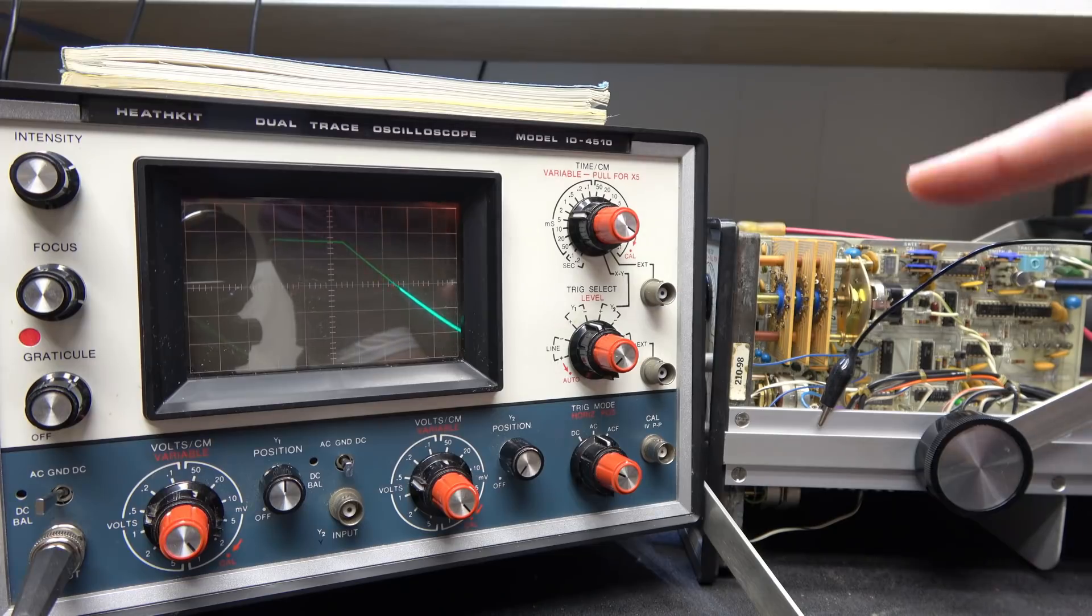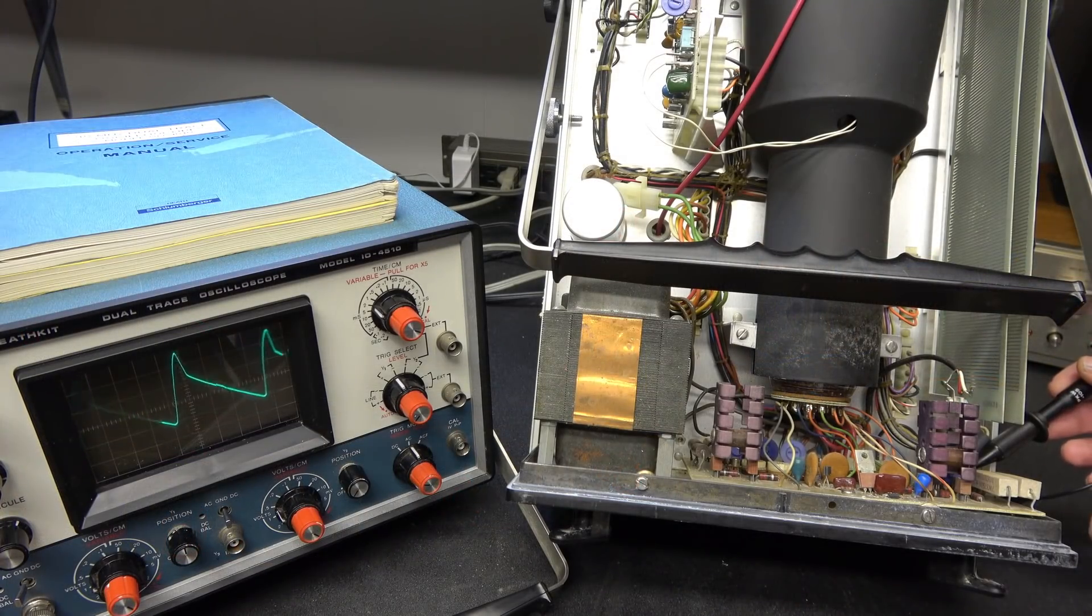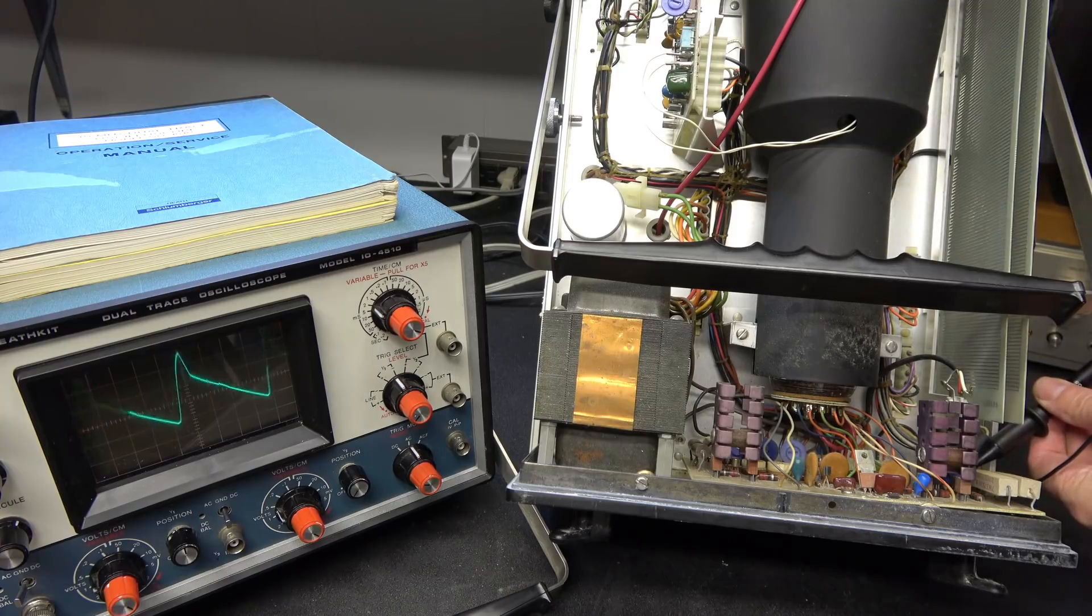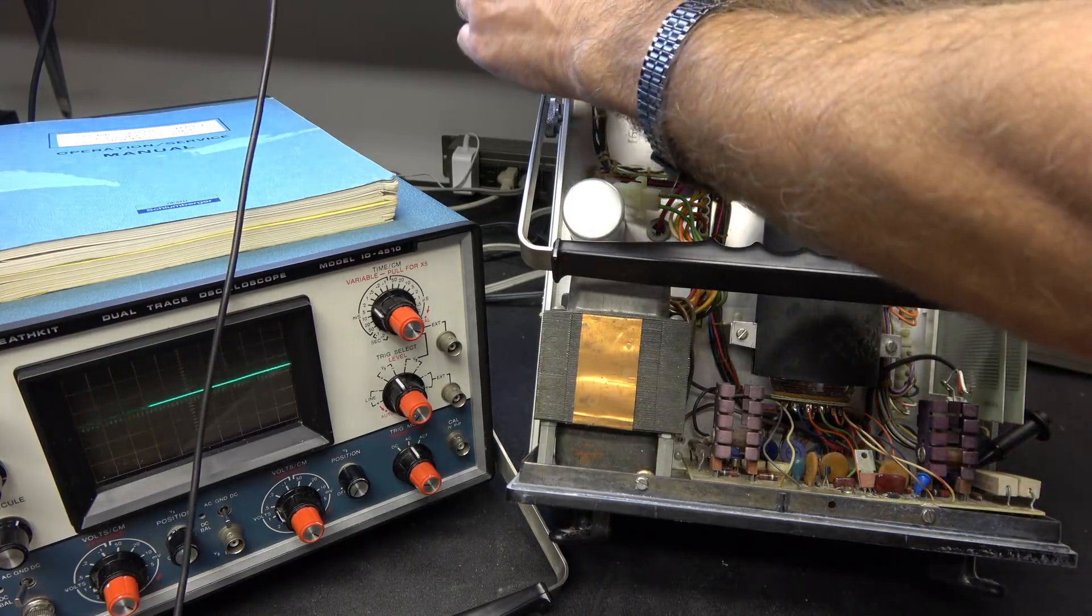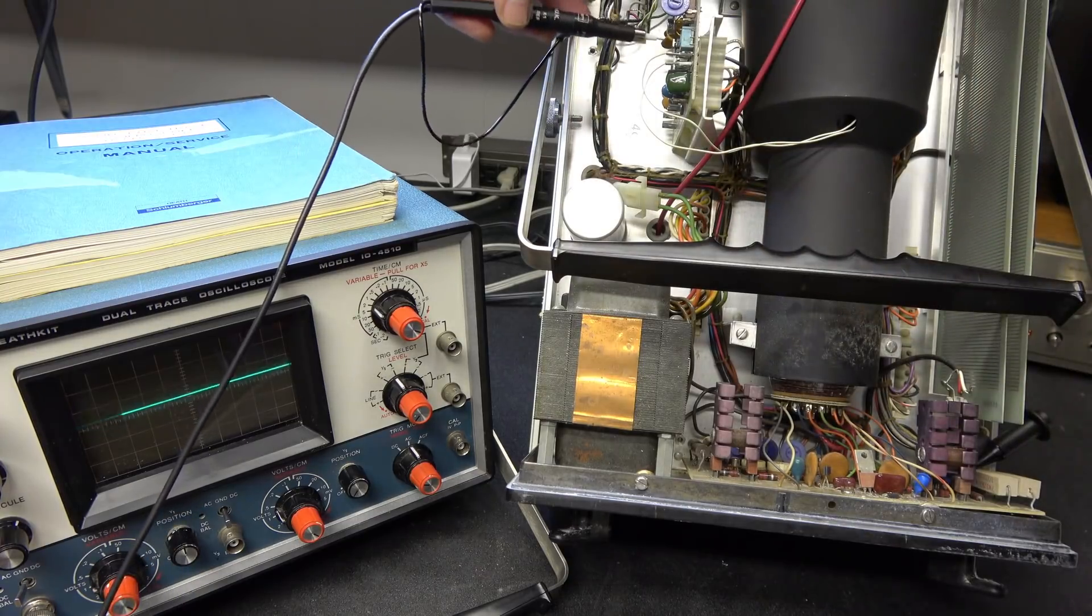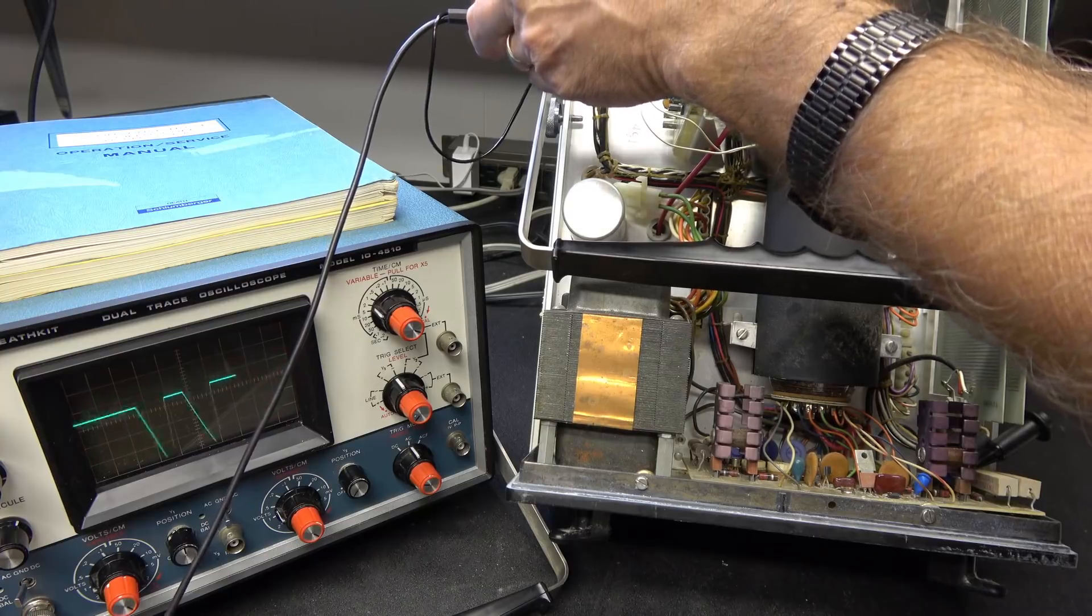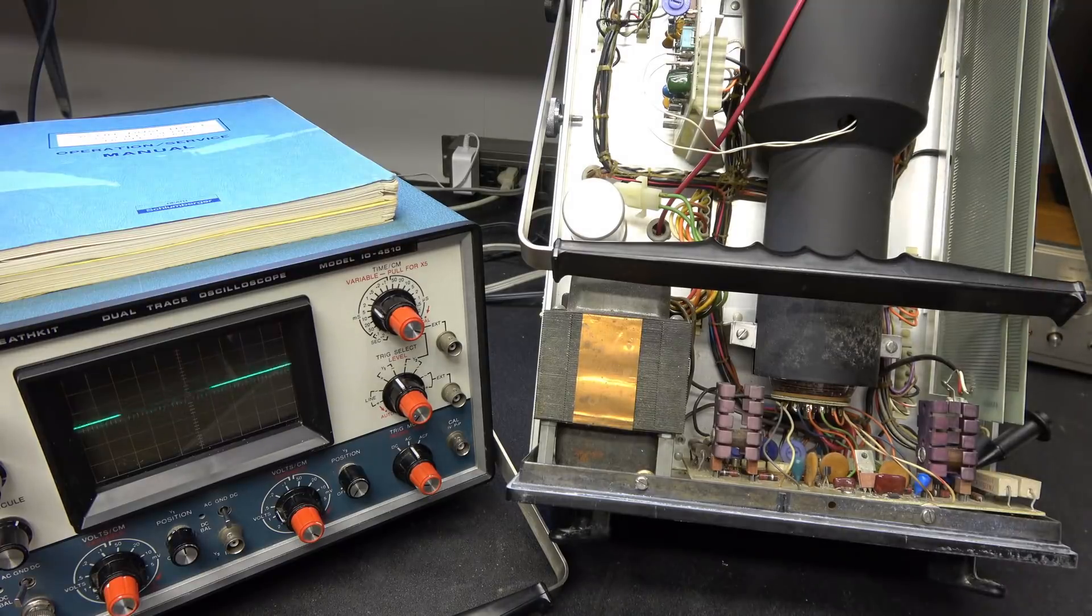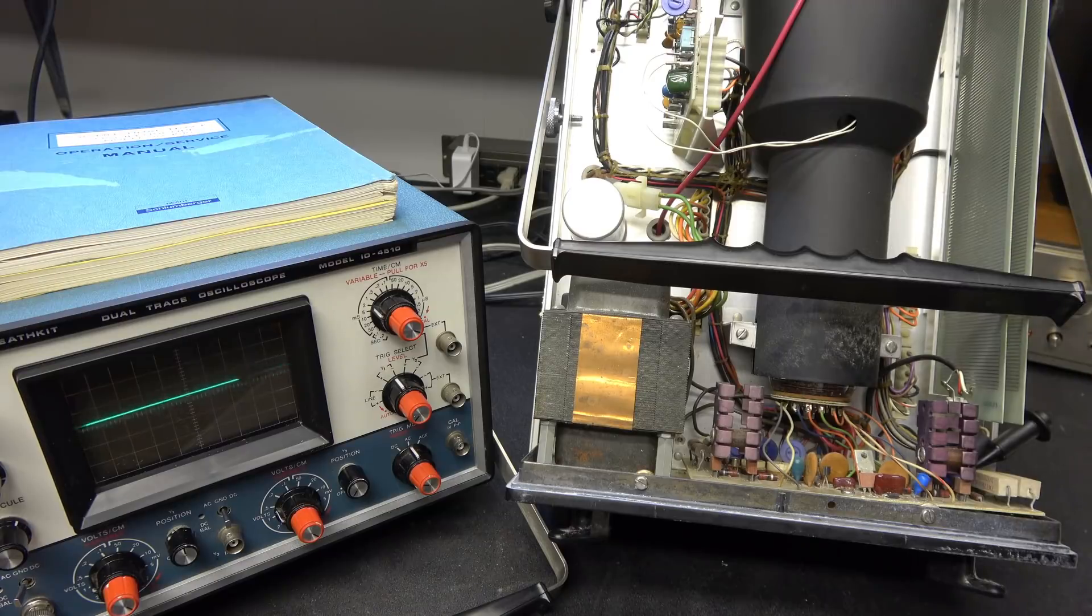So we have the horizontal sweep signal going over to that driver board, but for some reason it's not processing the signal. Let's go back to the driver board and see if that signal is even making it there. So I'm at the input to the transistor and the driver board. Now if I adjust the time, it's doing nothing. So that signal should look like this signal coming from the oscillator board. See that? It's a nice signal. It's a terrible signal coming in here.